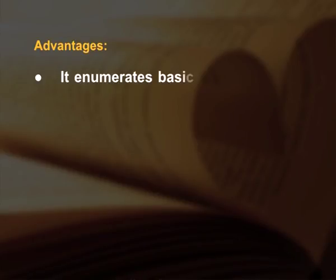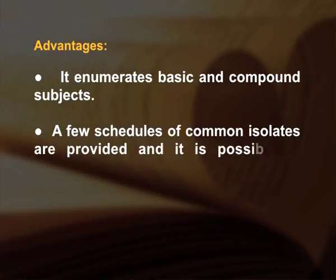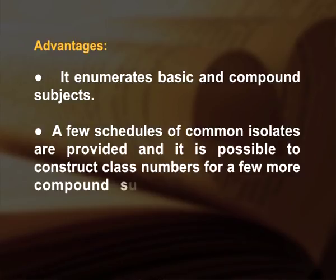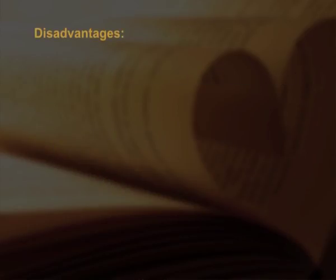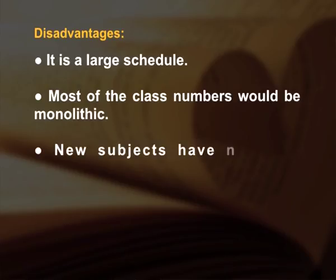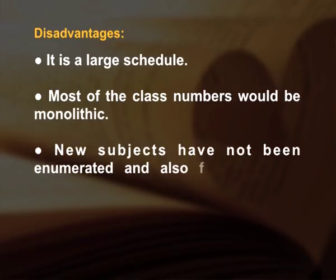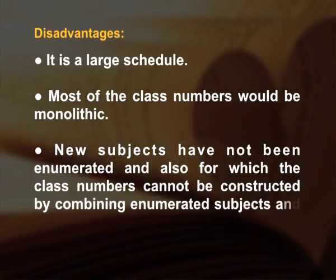Advantages of Almost Enumerative Classification Scheme: first, it enumerates basic and compound subjects; second, a few schedules of common isolates are provided and it is possible to construct class numbers for a few more compound subjects not enumerated in the schedule. Disadvantages: first, it is a large schedule; second, most of the class numbers would be monolithic; third, new subjects have not been enumerated and class numbers cannot be constructed by combining enumerated subjects and common isolates.